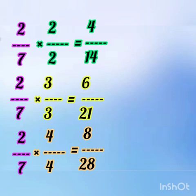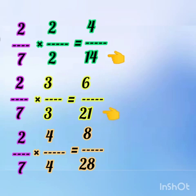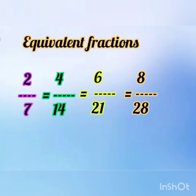The numerators 2, 4, 6, 8 are multiples of 2. The denominators 7, 14, 21, 28 are multiples of 7. For any fraction, we can find its equivalent fractions by multiplying numerator and denominator by the same number.